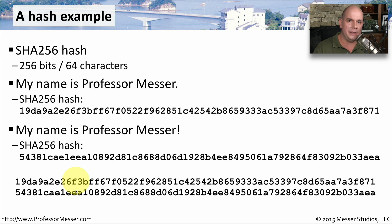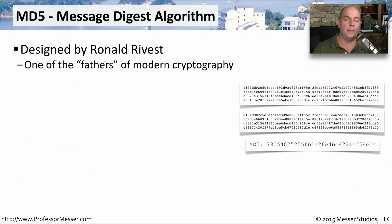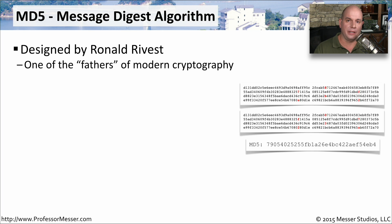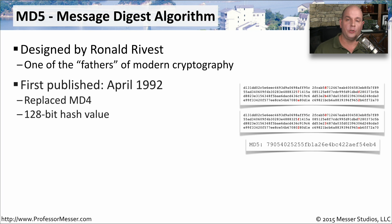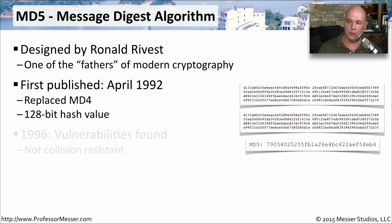Another popular hashing algorithm is MD5, which stands for Message Digest Algorithm 5. It was designed by Ronald Rivest — his name is literally the R in RSA. It was first published in April of 1992. It replaced the MD4 algorithm before it, and it provided 128 bits of hash value.